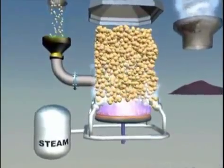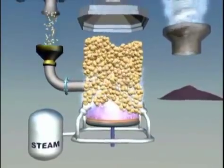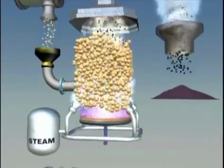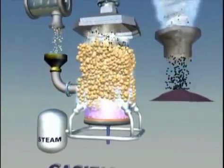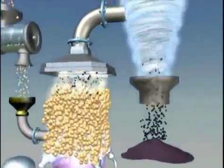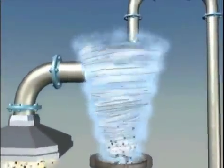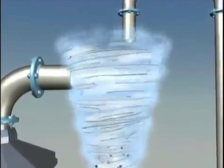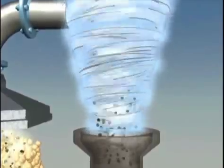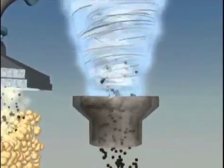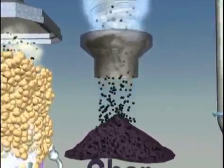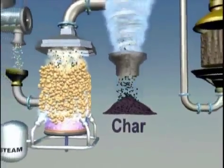In the gasifier, the biomass is broken down into vapors in a carefully controlled environment that typically contains oxygen and/or steam. The syngas produced is made up of carbon monoxide and hydrogen. Char, a solid byproduct of gasification, is typically removed using a cyclone. Cyclonic separation allows removal of particulates from a gas stream without a filter by using rotational effects in combination with gravity to collect the particles.